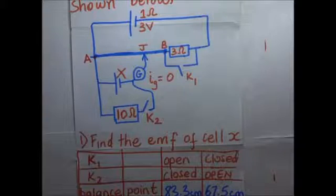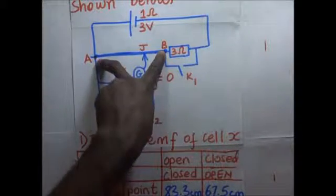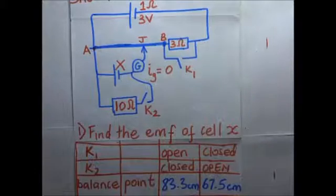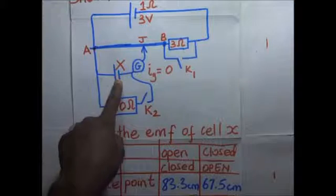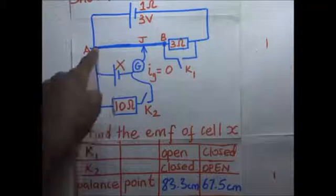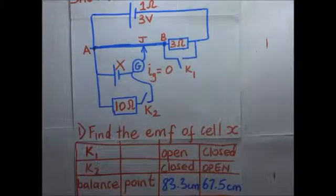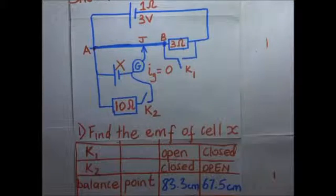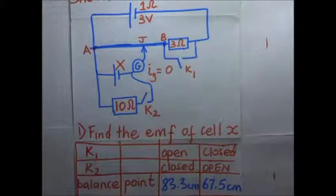The resistance per unit length is obtained by taking the resistance of the whole wire and dividing it by the length of the wire. For us to get the EMF of cell X, the EMF equals the potential difference across the balance point and point A when the 10-ohm resistor is out of the circuit. So we need to first get the PD per unit length, knowing that the wire is 1.2 meters long.